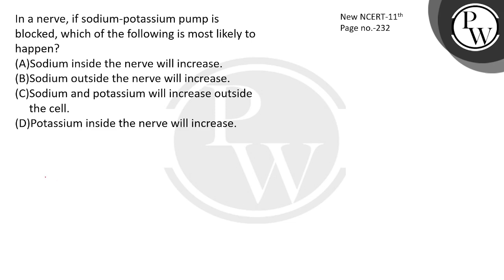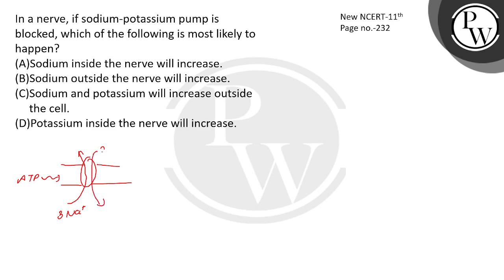What does the sodium-potassium pump do? In this pump, you will see ATP hydrolysis. The energy is used to move 3 sodium ions out and 2 potassium ions in. Sodium ions are sent out of the cell and potassium ions are brought into the cell.